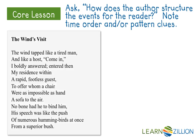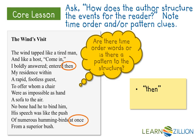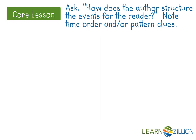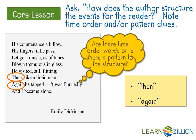Next I'm going to ask: how does the author structure the events for the reader? I'm going to note any time order or pattern clues. Looking for time order words, I have 'then' and 'at once' in the first half. Continuing the same strategy with the second half of the poem, I find 'just,' 'then,' and 'again' as time order words. So the time order words used are 'then' and 'again.'